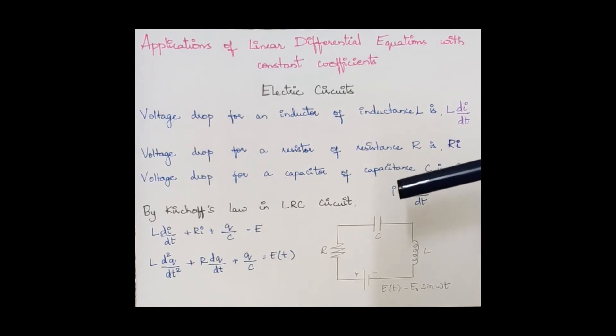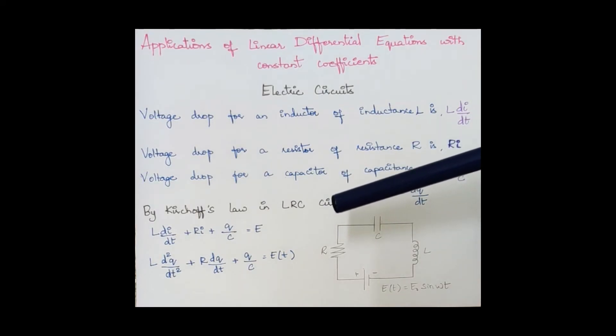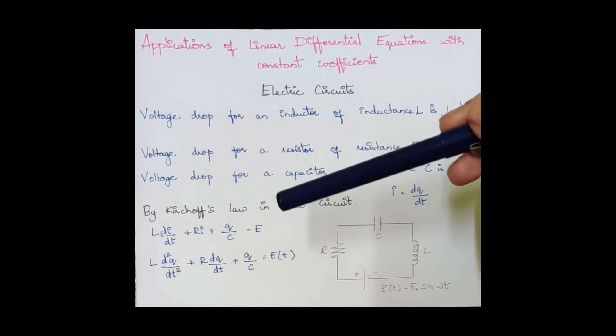By Kirchhoff's law in an LRC circuit, this is a circuit you obtain. The equation is L(di/dt) + Ri + q/C = E, where E is the applied voltage.